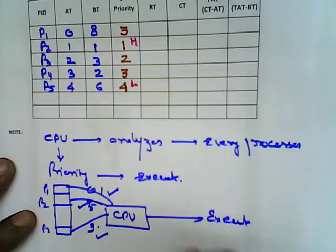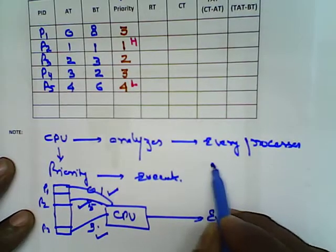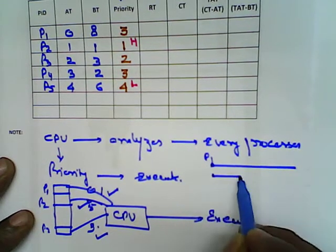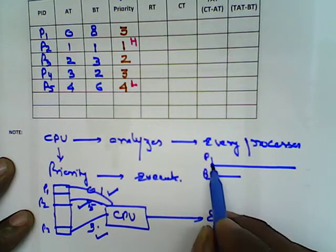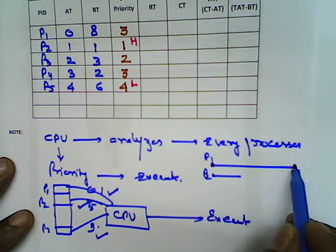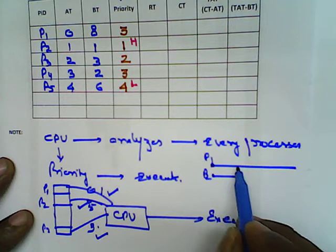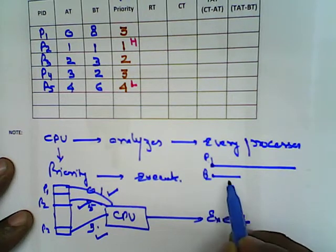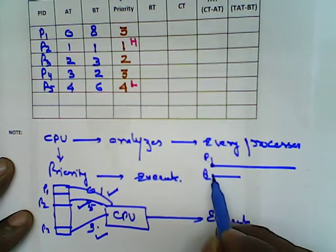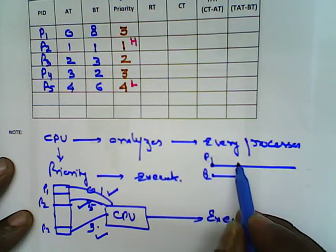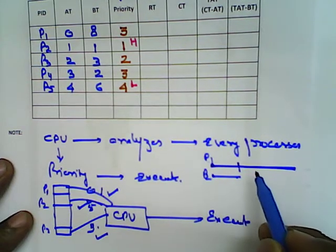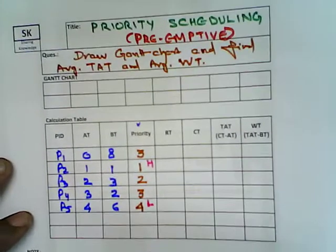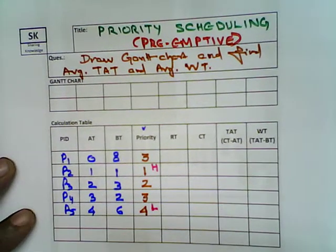This is a very important condition to remember. The condition here is preemptive. Preemptive means if P1 is a large process and P2 is a small process, P1 is not allowed to carry out the whole process at once. The CPU must also consider P2, so P1's process is divided in a batch-wise or group-wise manner.